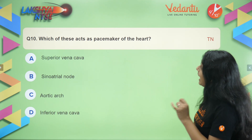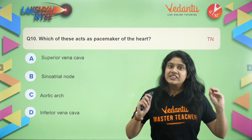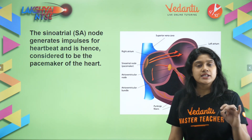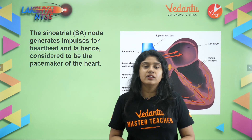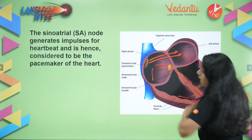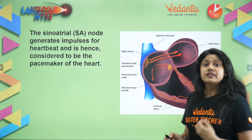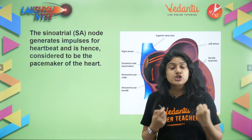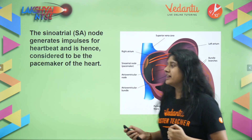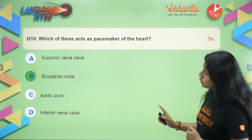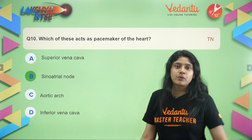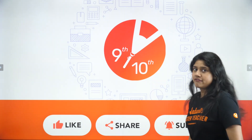Question ten — the easiest of all: which of the following acts as the pacemaker of the heart? It is none other than the SA node (sinoatrial node), which is present in the right atrium. The SA node produces the electrical impulse that makes the heart pump. The right answer is B: sinoatrial node.